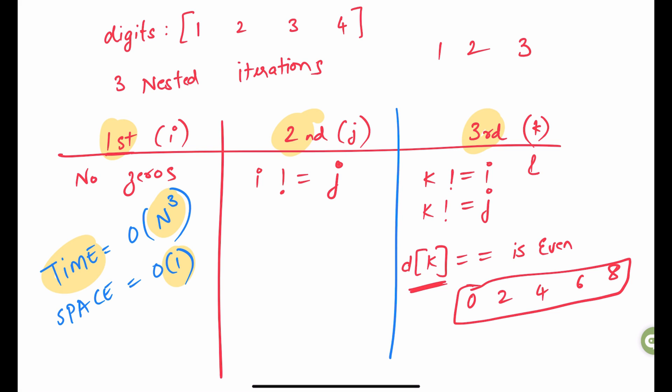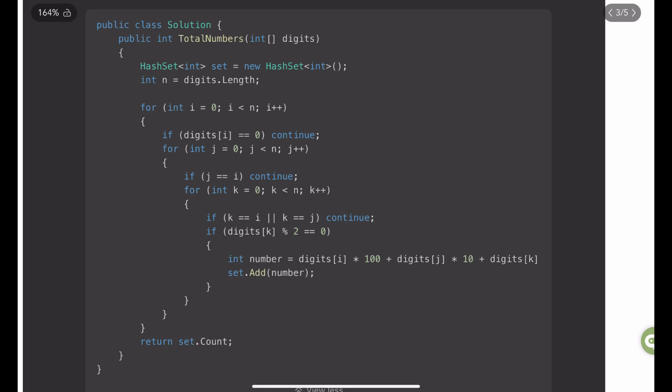I hope you were able to understand this solution. Let me show you how we can implement this using C-sharp. Here is my C-sharp solution. I have initialized a hash set variable called set which will be used to maintain all of the output that we are building and then start an outer for loop for i.